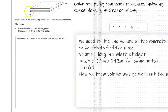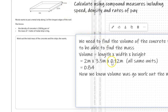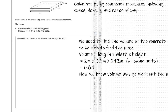Volume equals length times width times height. We've got mixed units, so what I'm going to do — and what I have done — is turn the 12 cm into 0.2 m so they're the same units, dividing by 100. So working out the volume: 2 m times 3.5 m times 0.2 m.